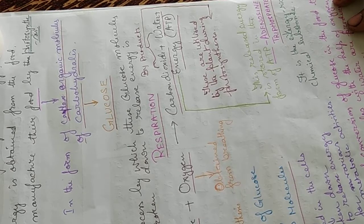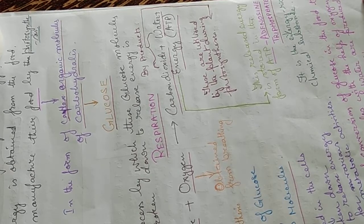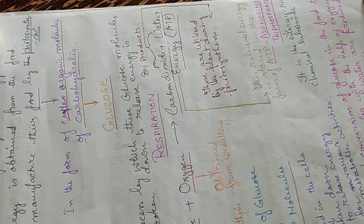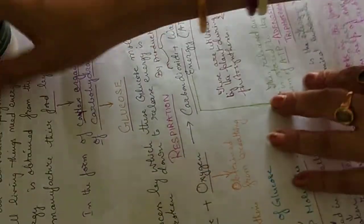One molecule of glucose releases 38 ATP molecules, which are stored in the cells and broken down to release energy for various metabolic activities. Therefore, the process of conversion of glucose to energy-rich ATP molecules with the help of oxygen, during which carbon dioxide and water are produced as byproducts, is called respiration.